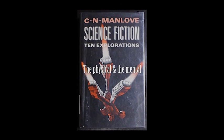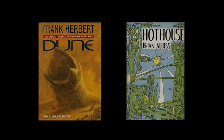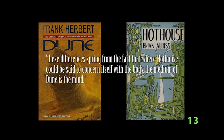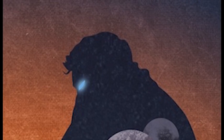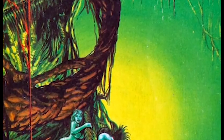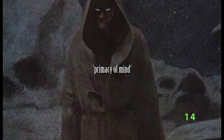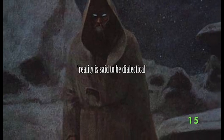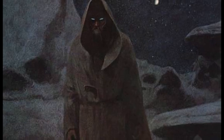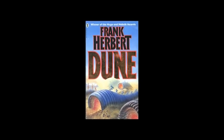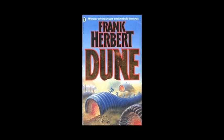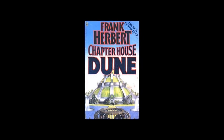Manlove's study looks at a comparison of the physical and the mental, and the nature of concealment in both Dune and Hot House. As Manlove points out, these differences spring from the fact that where Hot House can be said to concern itself with the body, the medium of Dune is the mind. Manlove's approach inspects the episodic isolation of the individual characters' minds in Dune, contrasting it with the arbitrary structure and physicality of Hot House. With Dune, Manlove finds that it is the primacy of mind that serves to fulfil the action in a world where reality is said to be dialectical. Manlove's study of Frank Herbert's Dune focuses primarily on the first novel, and although he briefly discusses the expansion of themes in the later books, his study was completed before the publication of Herbert's last book in the series.